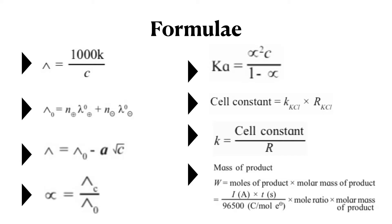Next, alpha is equal to lambda-c upon lambda-not. Alpha is the degree of dissociation. Lambda-c is the molar conductivity of a weak electrolyte at concentration c, and lambda-not is the molar conductivity at zero concentration. The next formula is Ka equal to alpha-squared times c upon 1 minus alpha, where Ka is the dissociation constant of the acid.